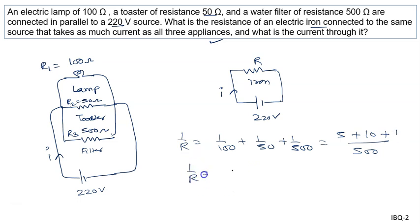So 1 by R can be written as 16 upon 500, which implies that R will be written as 500 upon 16 ohm. Further we will solve it and we will say it is 31.25 ohms.